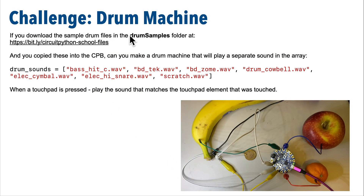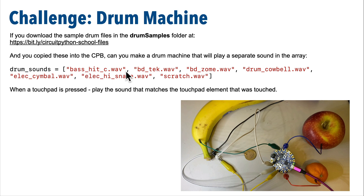Now it's time for our challenge — we're going to build a drum machine, as I promised at the end of the last video. I'm assuming you've got the wave files from the previous videos in a drum samples folder on your CPB. Create a list of the strings that are the names of those files, and use that list to play a sound when a given pad is pressed. When you press A1 — position zero — play bass_hit_C.wav, and when you press TX, play the scratch sound.